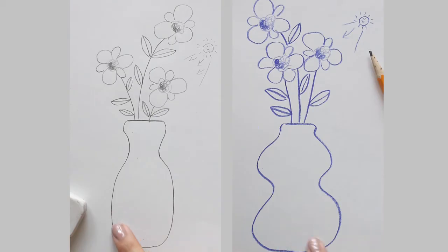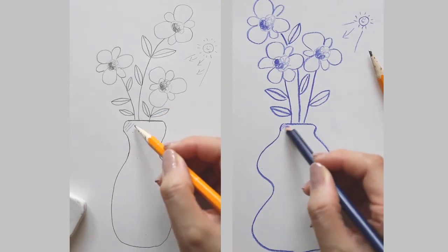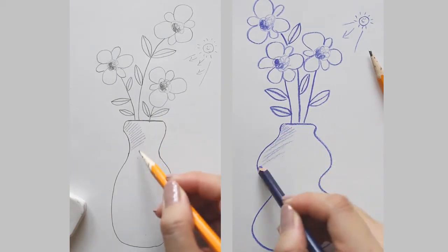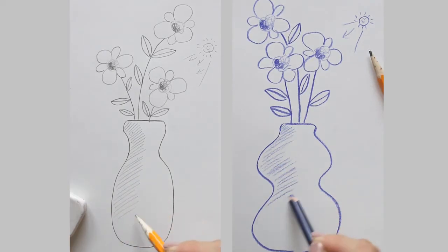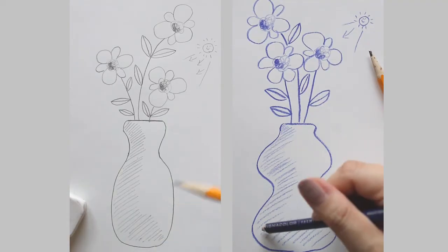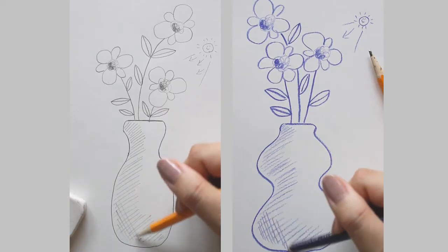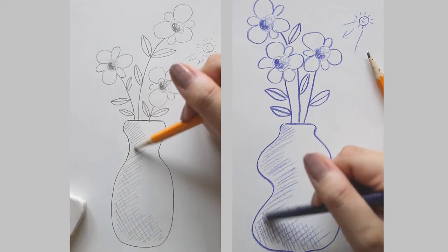The left side of the vase is going to appear darker since it's farther away from the light source. First, use hatching technique. Then use cross hatching technique to emphasize the darkest areas of the vase.